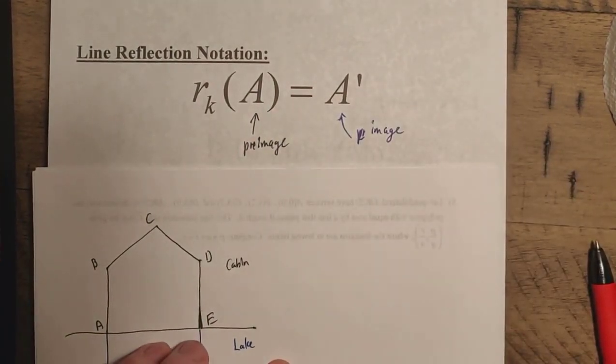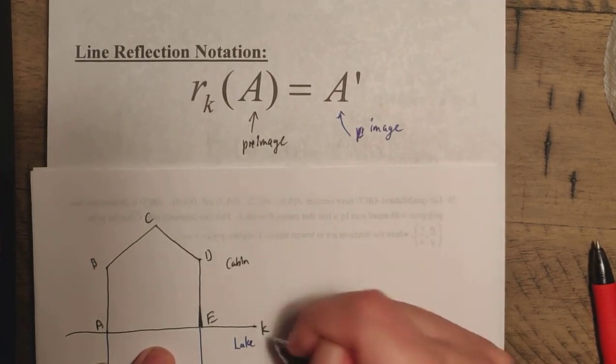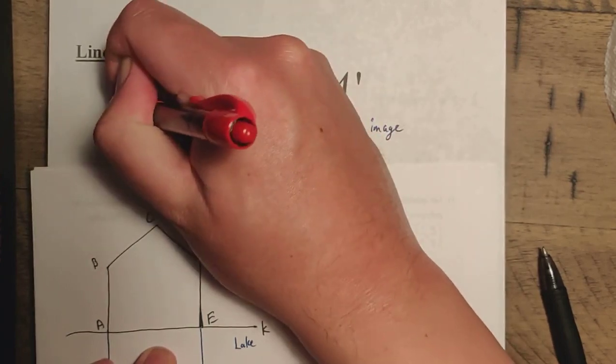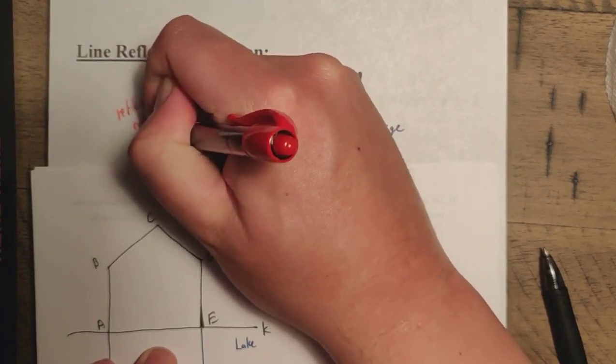And we note that in this situation, we have an R and K here. I forgot to label on this picture here. This is K. This is our line K here. This R here, as you can tell, this is going to be a reflection. This tells us a reflection over line K.